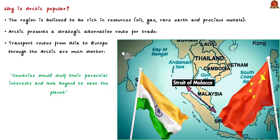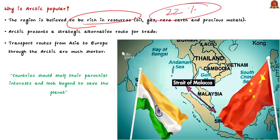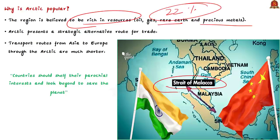Why is the Arctic region so popular? First, the Arctic is believed to be rich in resources. According to some estimates, 22 percent of the world's undiscovered oil and gas is present in the Arctic region. Also, the world's largest deposits of rare earths and precious metals are found there. Additionally, the major sea roads are becoming very contentious. For example, the Strait of Malacca — a small passage between Malaysia and Indonesia — is one of the busiest trade routes in the world.